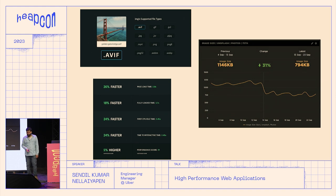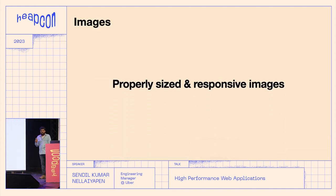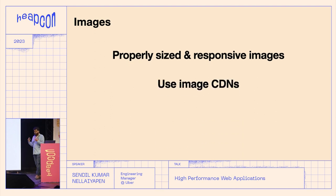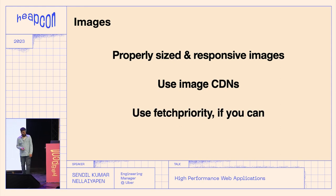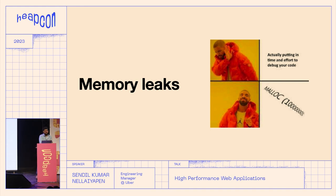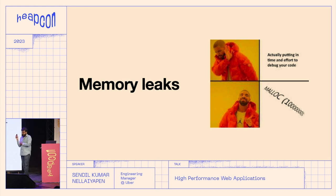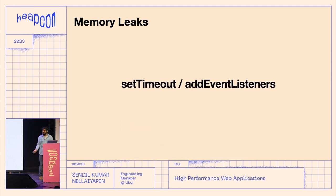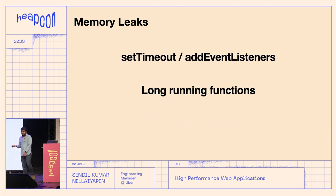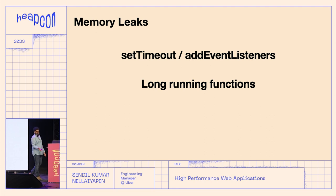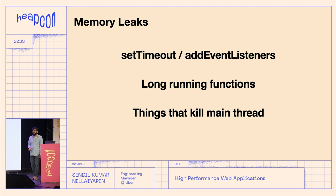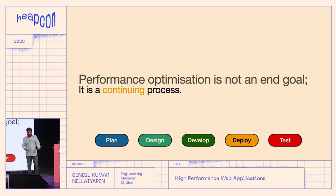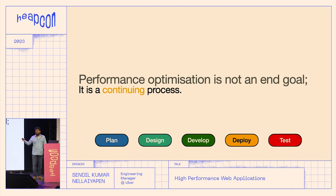There's also the AVIF image format, which gives you around 31 percent savings just from a format change. Image CDNs can apply this automatically. When using images, think carefully: use properly sized and responsive images, use image CDNs when possible, and use fetch priority. Memory leaks are another performance concern. JavaScript is memory-managed, but memory leaks are a real thing. Common culprits are setTimeout and addEventListener — if you're allocating them, make sure to remove them. Long-running functions also slow your application and can kill your main thread.